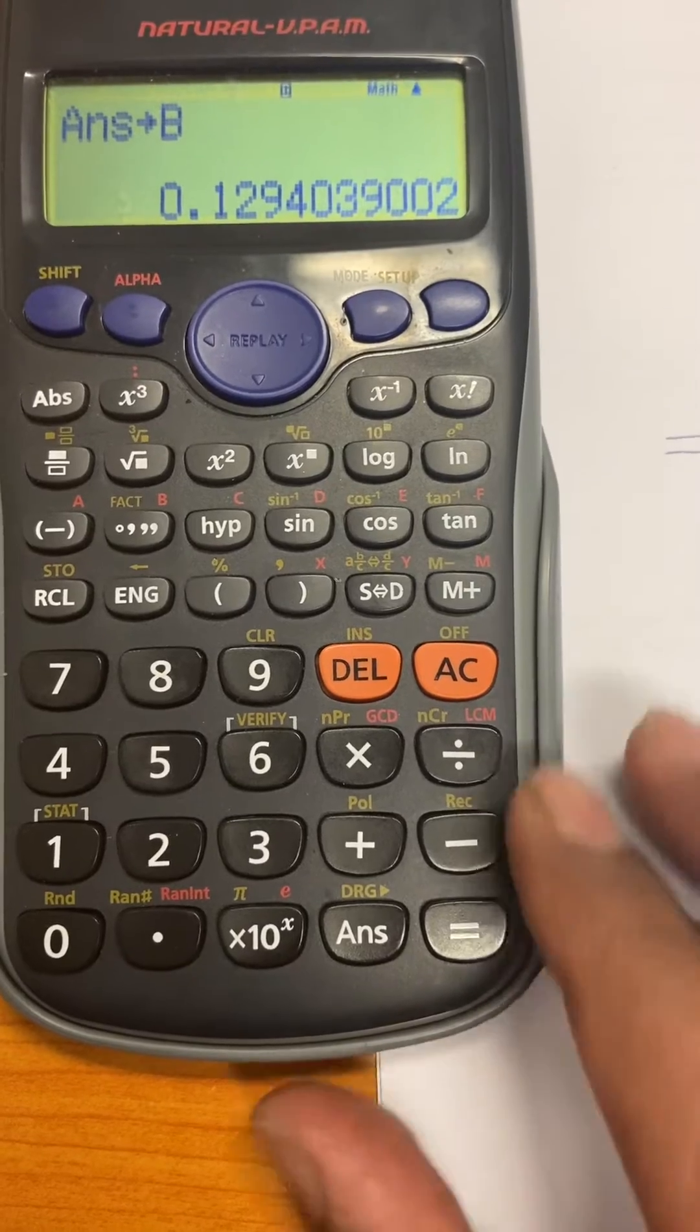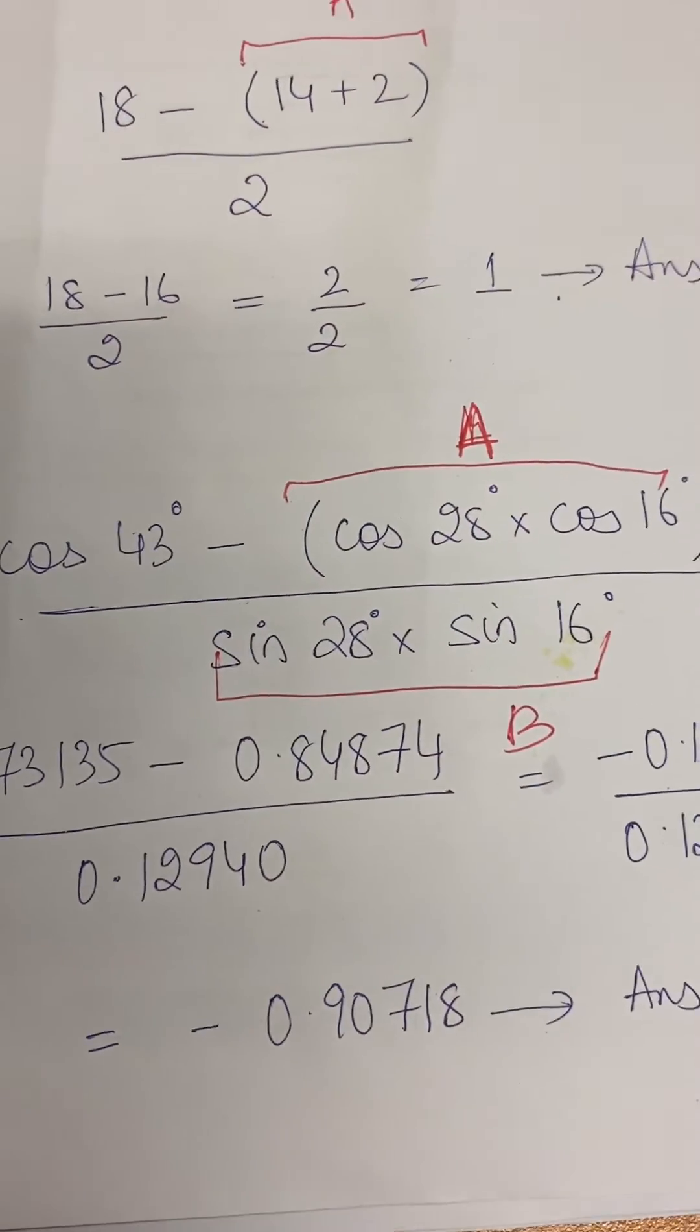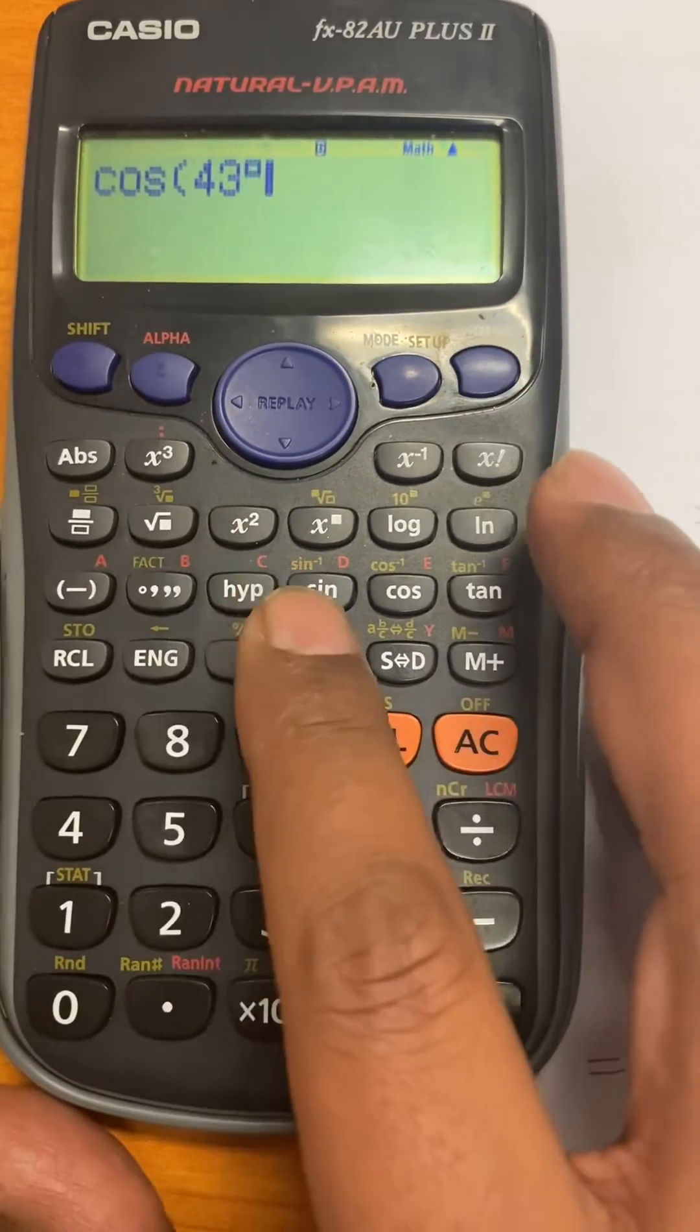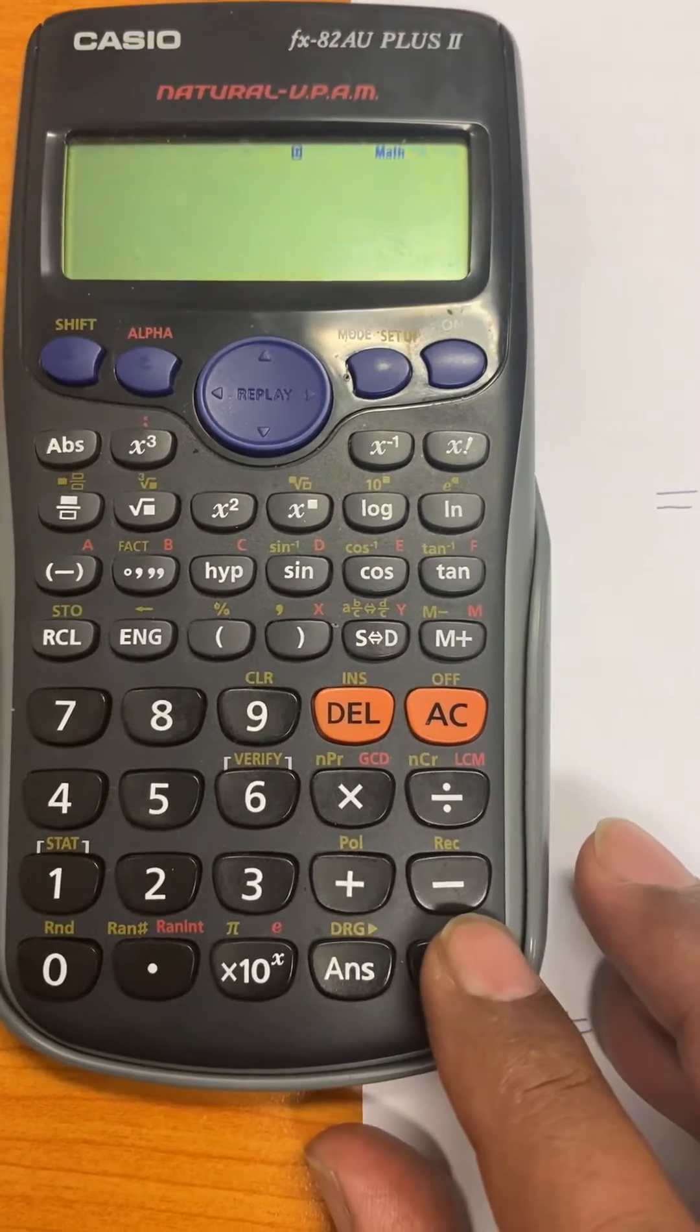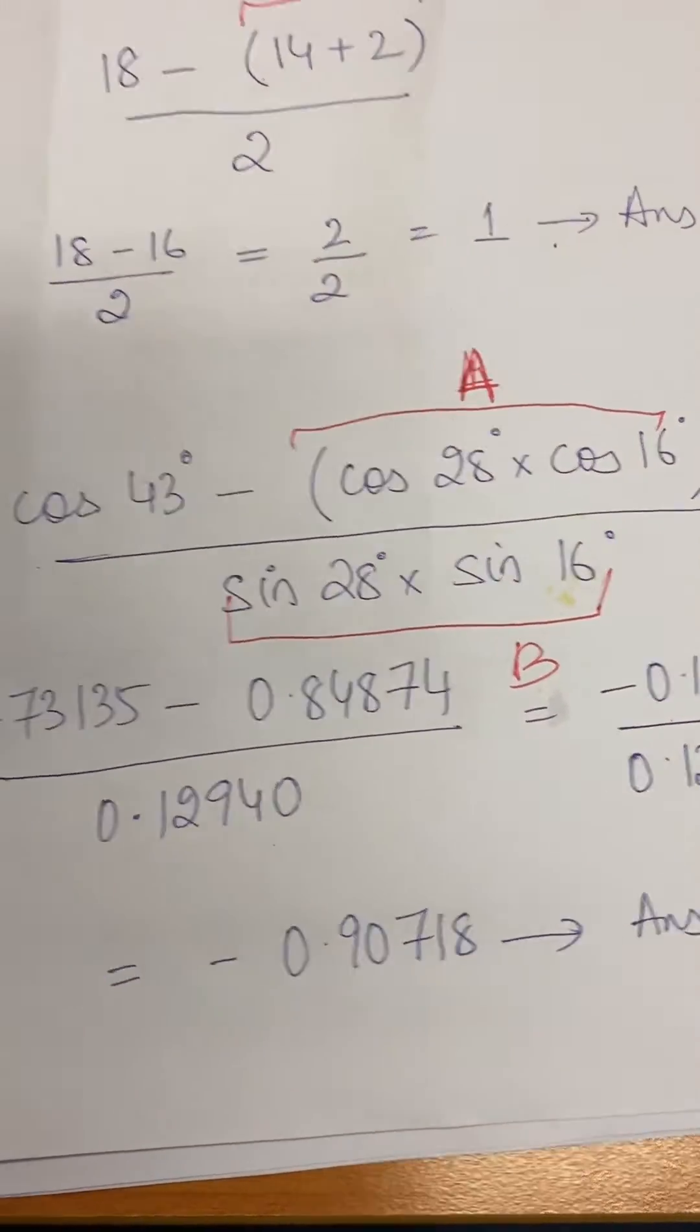So now if I have to continue with this question here I will find cos 43, and then cos of 43 degrees. What is it equal to? It's equal to 0.73135.